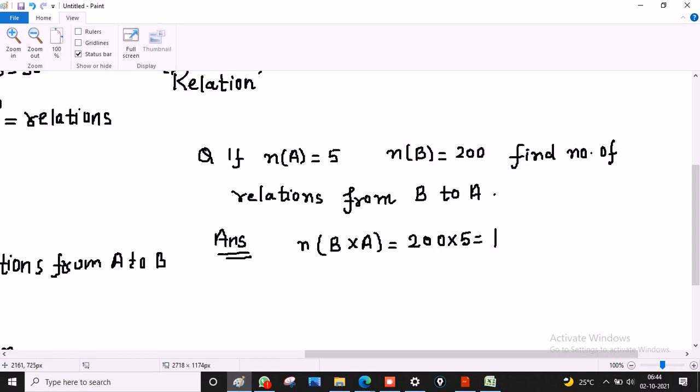But we have asked number of relations. So, number of relations means number of subsets of B cross A, which is 2 raised to power number of elements. That is, 2 raised to power 1000 is the answer.